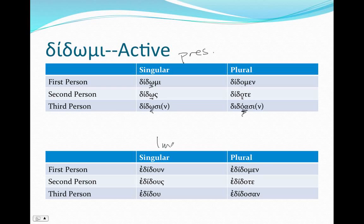Let's take a look at the imperfect. We've got our epsilon augment and our doubled stem, but then we're going to use a different version of that long vowel — not omega, but upsilon. Remember, this is also a perfectly good long 'o' sound. So: ededon, ededoos, ededoo. Our endings are just as we'd expect, just like we had in deiknumi. Ededomen — short stem — ededote, ededosan. Same endings as deiknumi, but now we've got a reduplicated stem.